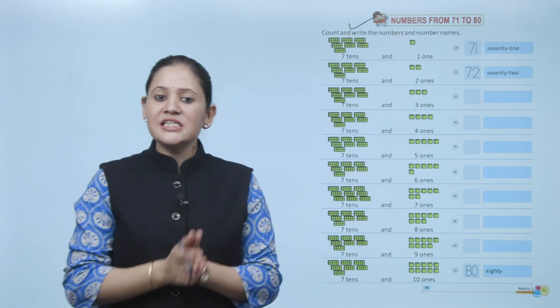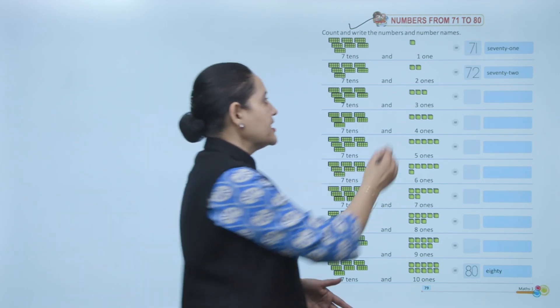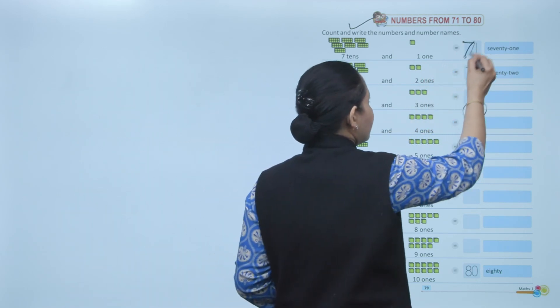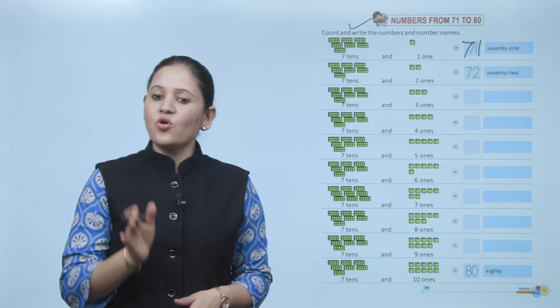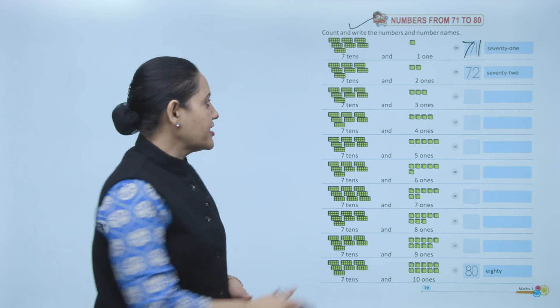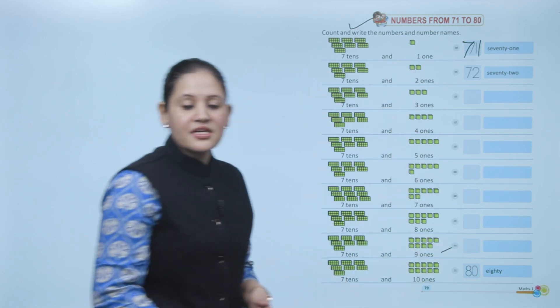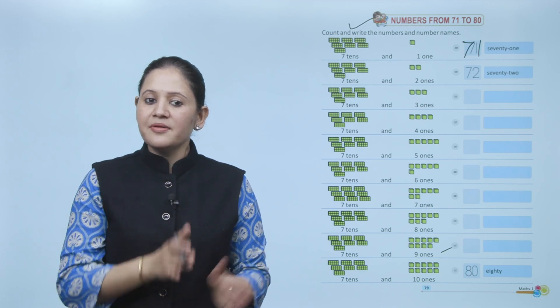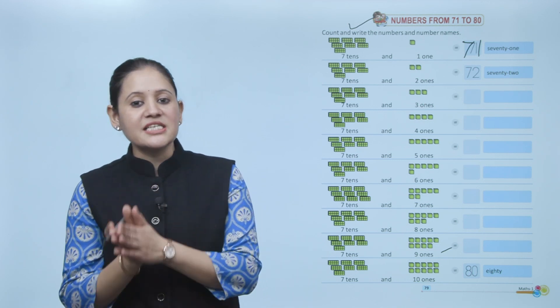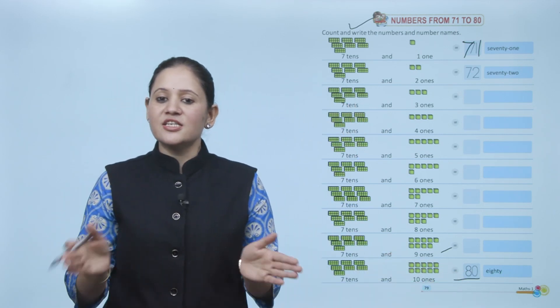71 means 70 plus 1. 70 means 7 tens plus 1 one — that makes number 71. S-E-V-E-N-T-Y-O-N-E. Like this you can make numbers up to 79. Then comes 80: 8-0. That means 7 tens plus 10 ones — 70 plus 10 equals 80. E-I-G-H-T-Y.